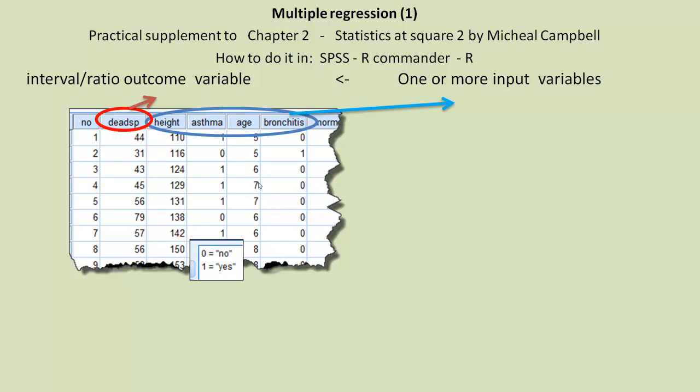So I've coded asthma as 0 equals they don't have asthma, 1 they do have asthma, and the same for bronchitis: 0 if they don't have it, 1 if they do.